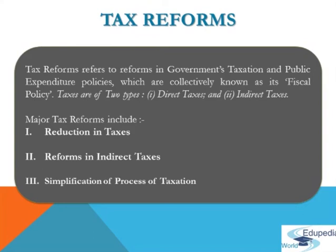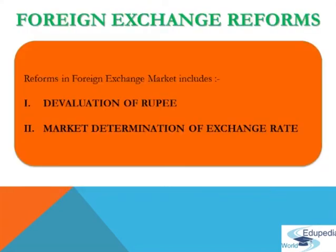Next are foreign exchange reforms. The important reforms made in the foreign exchange market include devaluation of the rupee — that is, the reduction in the value of domestic currency by the government to overcome the balance of payments (BOP) crisis. The rupee was devalued against foreign currencies, which led to an increase in the inflow of foreign exchange. The government also allowed the rupee's value to be free from its control, so that market forces of demand and supply now determine the exchange value of the Indian rupee in terms of foreign currency.